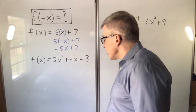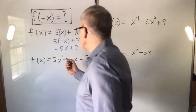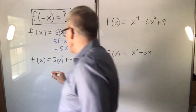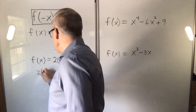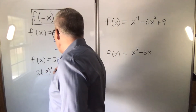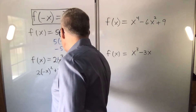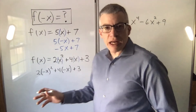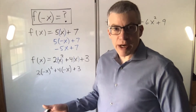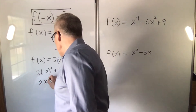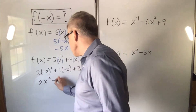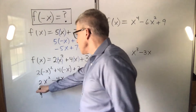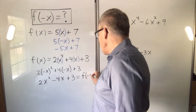Now for another one. Every place there's an x, put parentheses around it, and we're going to replace with negative x. So we get 2 times negative x squared plus 4 times negative x plus 3. Negative x times negative x is x squared, so we get 2x squared. 4 times negative x gives us minus 4x plus 3. So that is f of negative x.